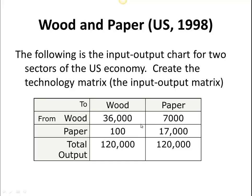One of the key things when looking at the table is that most input-output tables will give us a total output. When these tables are made, they're made in terms of — we used up 36,000 units of wood in order to produce 120,000 units of wood, and we used up 100 units of paper to produce 120,000 units of wood. Over in the paper column, 7,000 represents how many units of wood we used up to create 120,000 units of paper. These happen to be the same number — 120,000 for our total outputs — but they don't always have to be the same. It's very unique that they are. This table is basically built off a total output of 120,000 units.